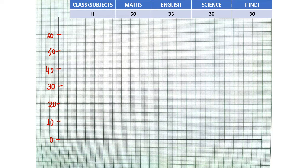Now on this horizontal line, we will draw the bars for the subjects according to the data given to us. Here we have 50 students in Maths, so we will draw a bar whose height will extend till 50. As you can see, we have drawn this bar up to the 50 mark — this is for Maths.